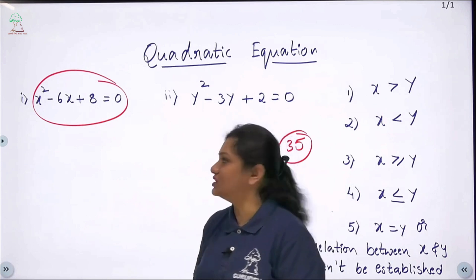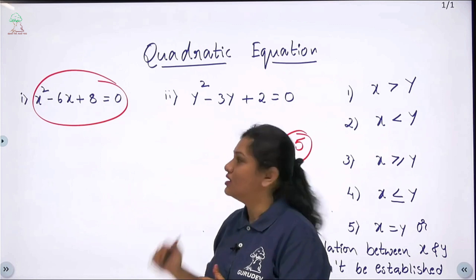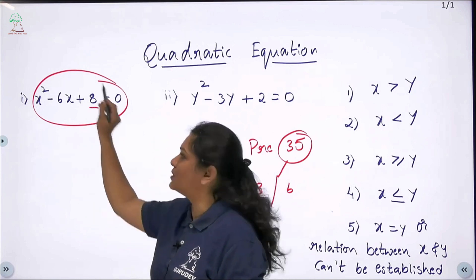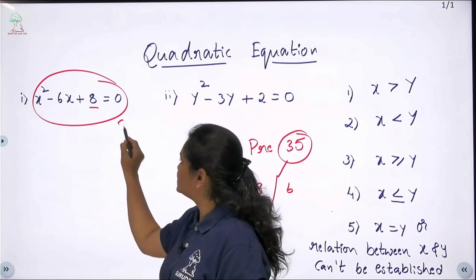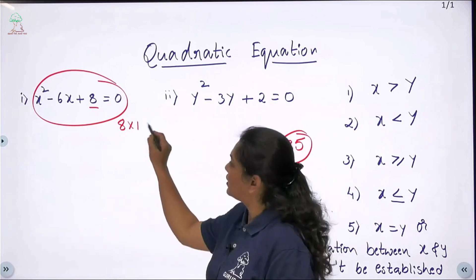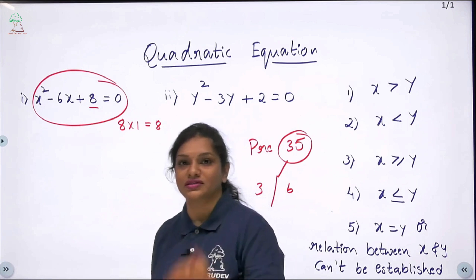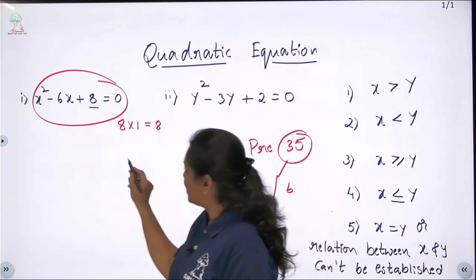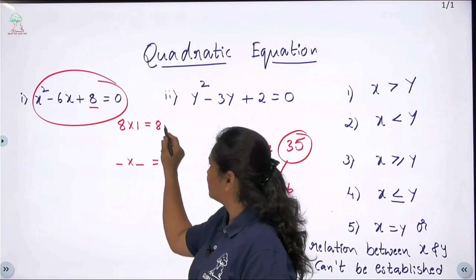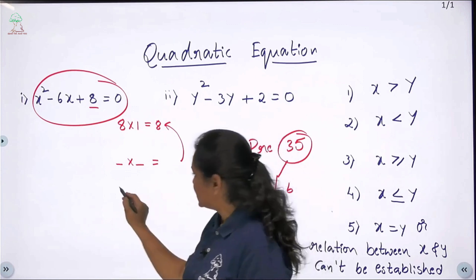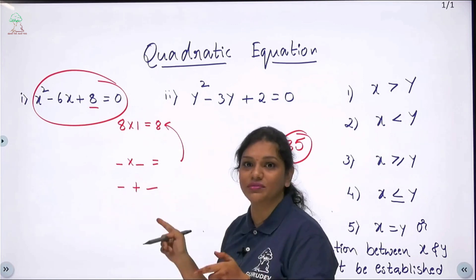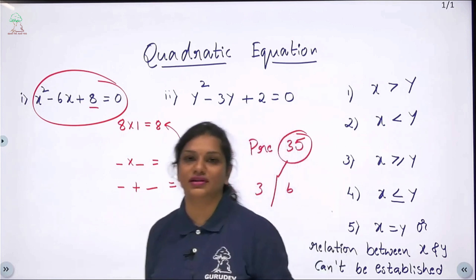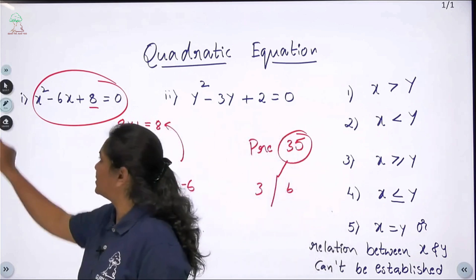Once confirmed it is a quadratic equation, the second step is to multiply the constant term with the coefficient of x². Here the coefficient of x² is 1 and the constant is 8, so 8 × 1 = 8. Then we need to find two numbers such that when multiplied they give 8, and when added they give the middle term's coefficient, which is −6. Signs must be considered — that is very important.